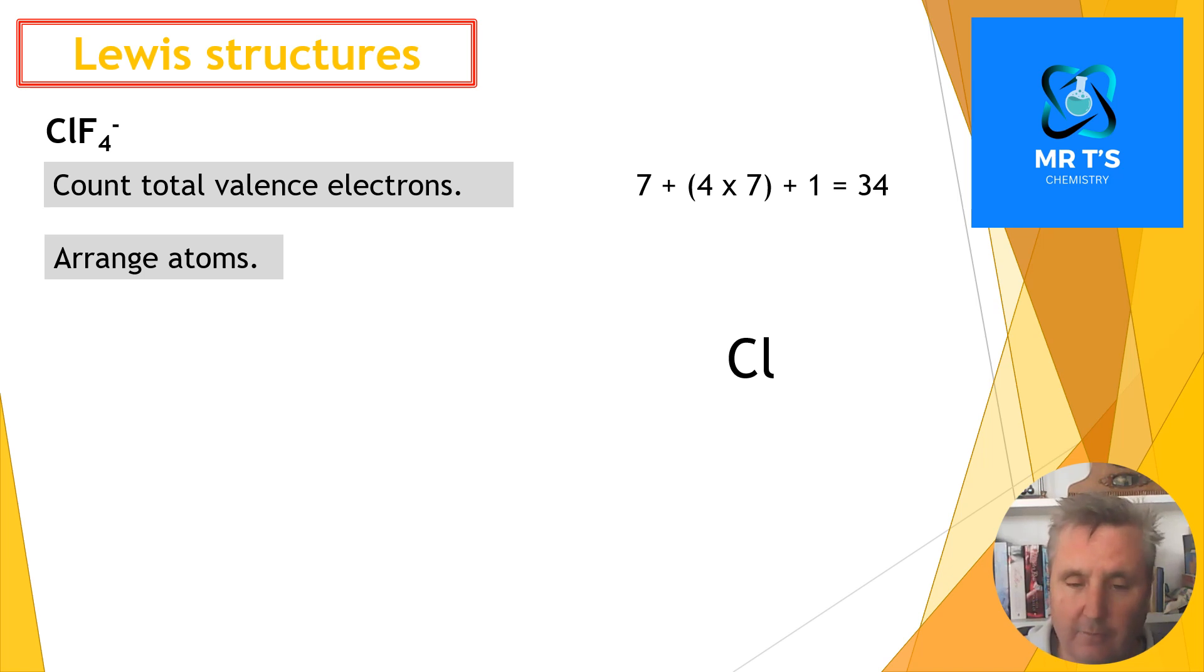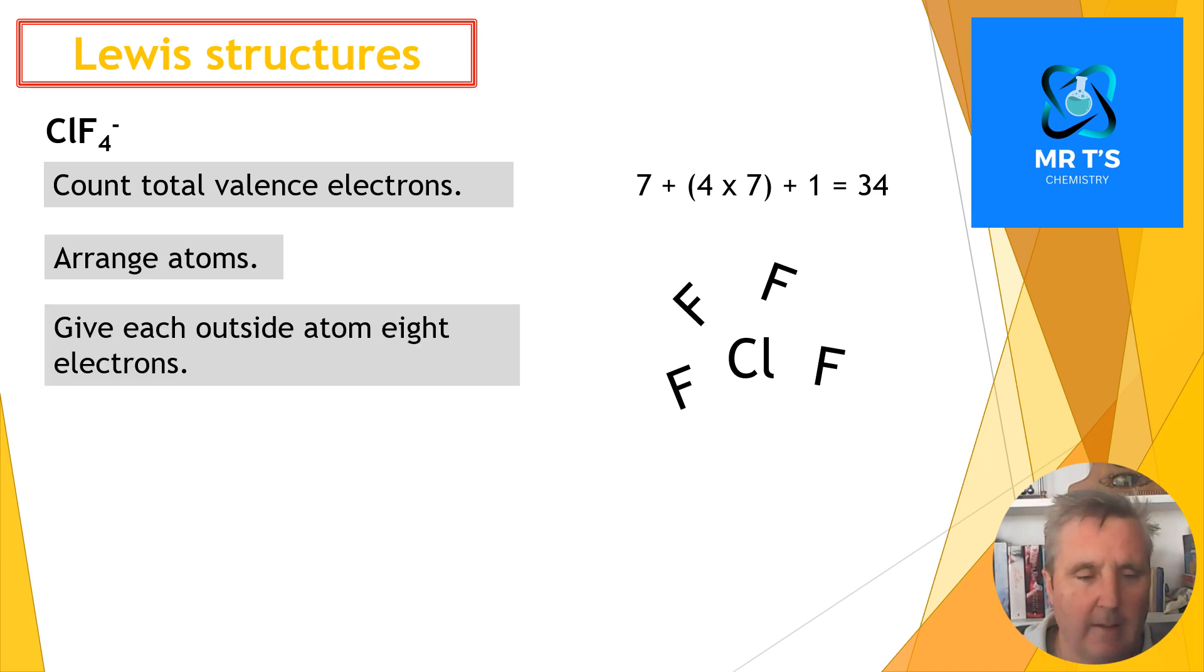Arrange the atoms: chlorine is going to go in the middle—it's the bigger atom but it's also the first drawn—and put the fluorines all around the outside. Notice I always leave a space at the bottom because I might have extra electrons. I kind of know if I'm going to have extra electrons because if I've got atoms around the outside that need eight electrons, and my number is a multiple of eight, then I won't need any extra electrons around the middle. In this case it's 35, which is three more than 32, so I know I'm going to have two extra electrons. I give eight electrons to each of the outside atoms; I have used 32. I have two left, and I put them next to the center atom like I thought I would.